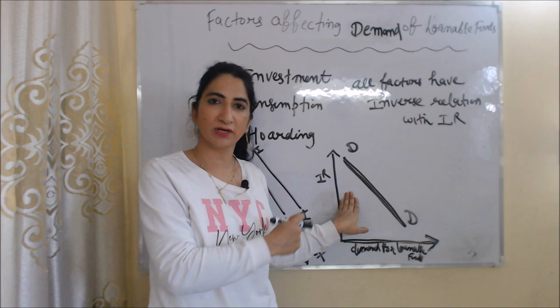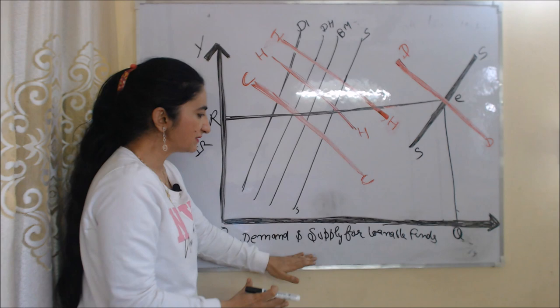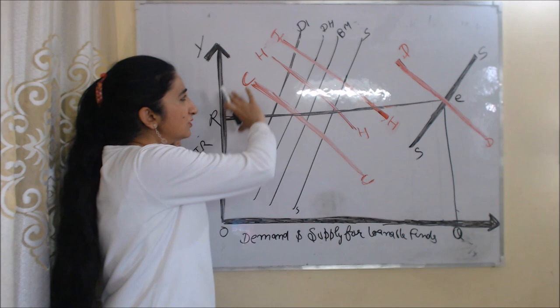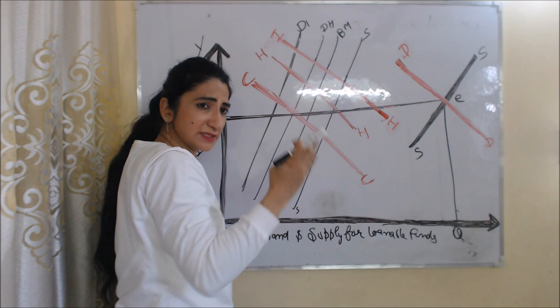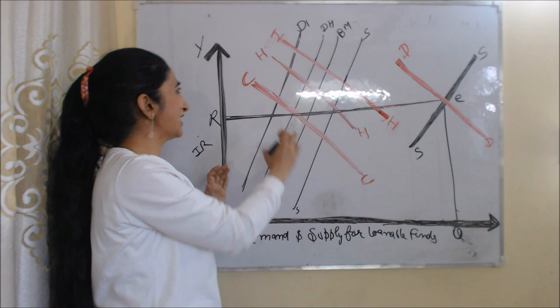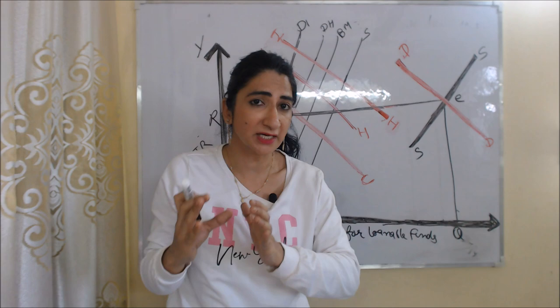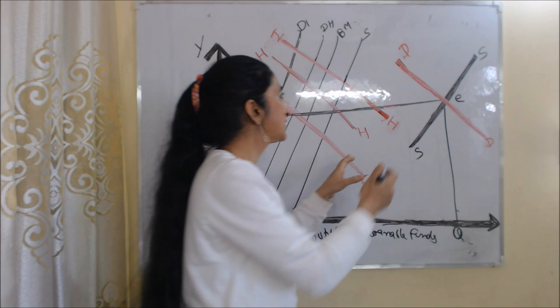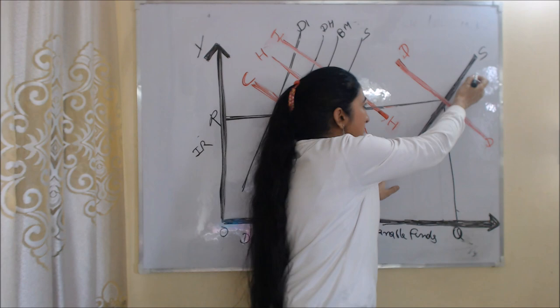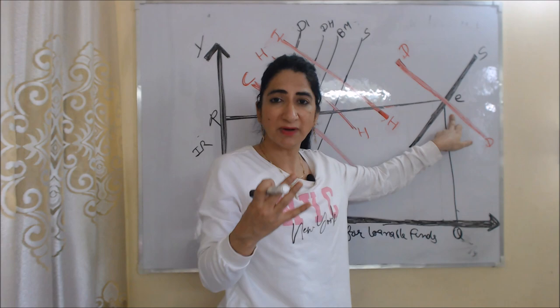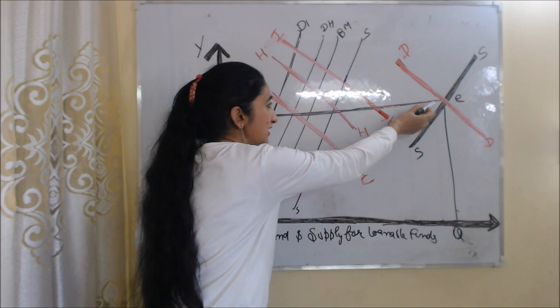Here we bring everything into one diagram. On the X axis we have demand and supply for loanable funds, and on the Y axis we have interest rate. The black curves DI, DH, BM, and SS represent all factors affecting supply of loanable funds, and the red curves CC, HH, and II represent all factors affecting demand for loanable funds. According to this theory, interest rate is determined by demand and supply of loanable funds. The DD curve represents total demand and the SS curve represents total supply. At point E, demand for loanable funds and supply of loanable funds are equal — this is where the equilibrium interest rate OR is determined. This is all about the loanable fund theory of interest rate. Thank you so much for watching. Bye, take care.